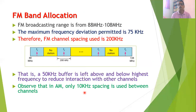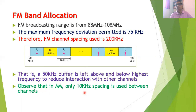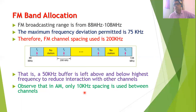In FM we use a higher frequency range, which allows for a higher channel spacing. That is the reason FM reception is of better quality than AM reception.